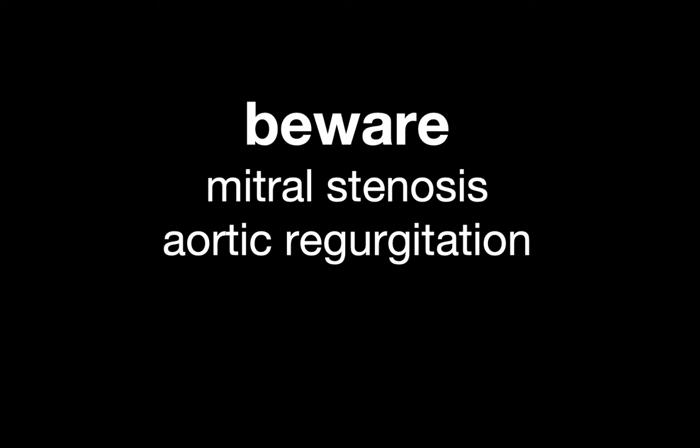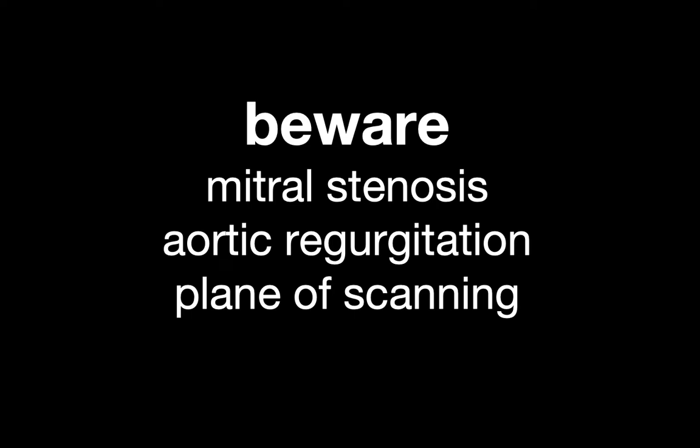A couple of other points: with any sort of heart failure often comes valvular disease. Things that may give you an artificially elevated EPSS are mitral stenosis or aortic regurgitation. Next is the plane of scanning — when obtaining the parasternal long view, you really want that LV cavity size to be as long and as open as possible. If you're out of plane, it may also give you an artificially elevated EPSS measurement.